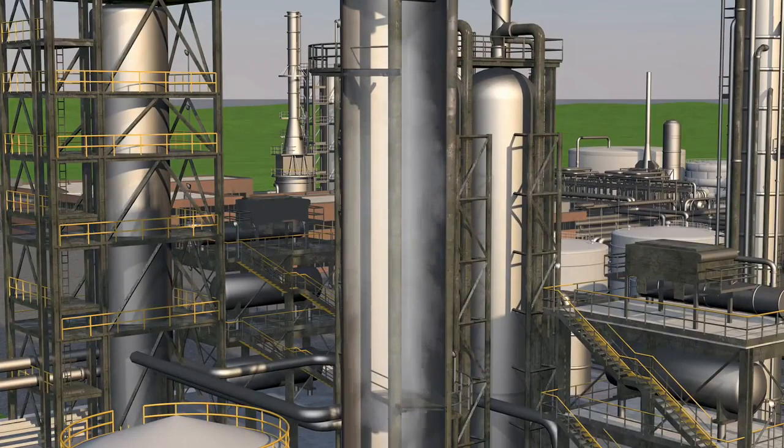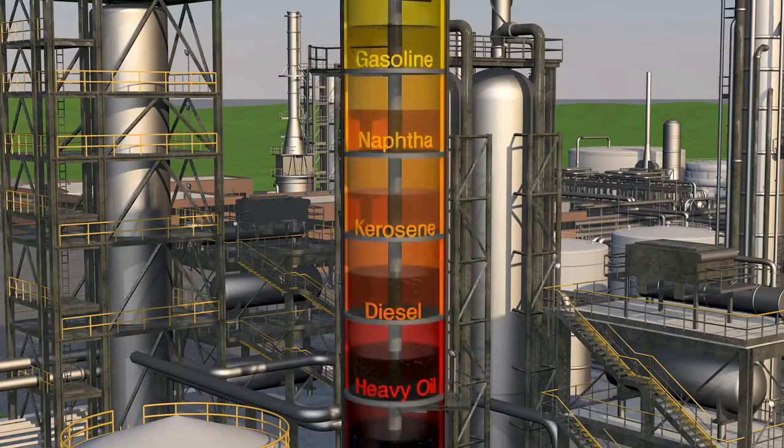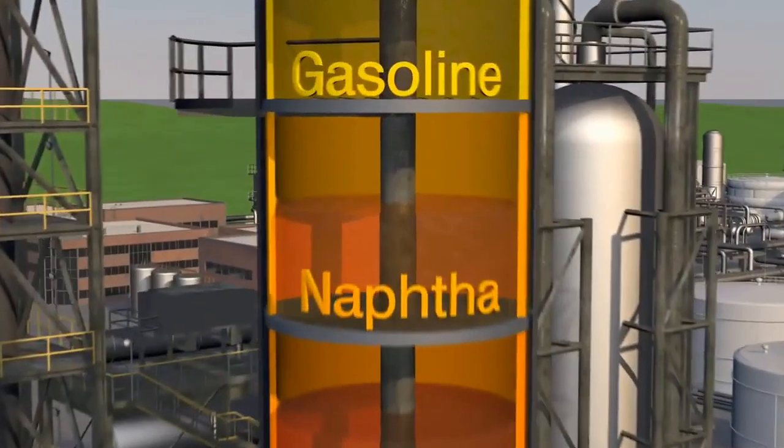As it rises and cools, the vapor turns back into a liquid. Using stacks of trays, the liquid is easily collected and separated by weight.